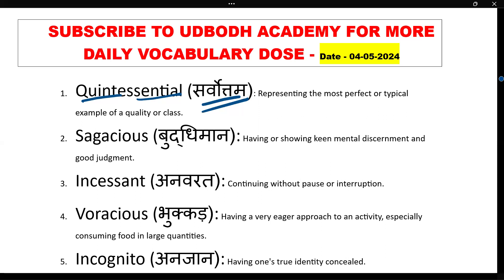Quintessential hai. Ab isko yaad karne ke liye dekhiye — 'quint' matlab quintal, aur 'essential' ka matlab hota hai avashyak. Matlab koi aisi cheez hai jo quintal mein avashyak hai — uski intensity bata raha hai. Jo cheez bahut zyada zaroori hai, vo sabse achhi cheez hai, sabse best, sabse perfect cheez hai. Quintessential — the first word is clear and the technique is also clear.